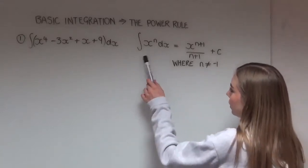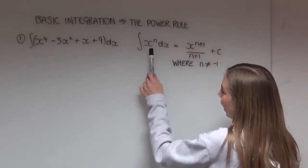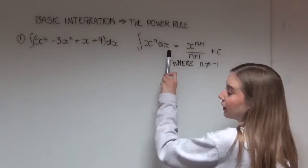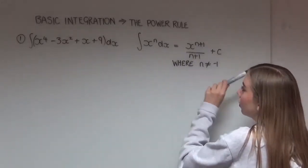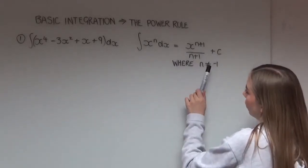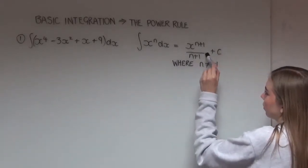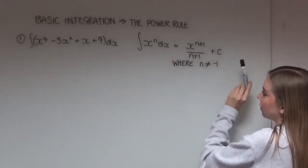The power rule is written here and it states that when you integrate x to the power of n with respect to x, it goes to x to the power of n plus 1 divided by n plus 1. And then we have to add on this constant of integration, which is c.